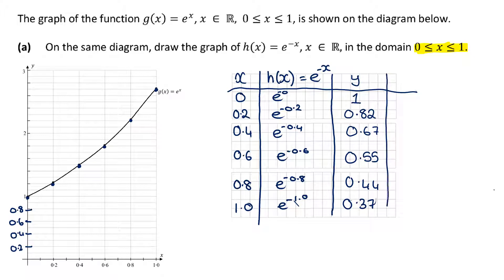Just to take a look at our actual points: the first point is (0,1), the next is (0.2, 0.82), the next one is (0.4, 0.67), here is (0.6, 0.55), here is (0.8, 0.44), and we have (1, 0.37).